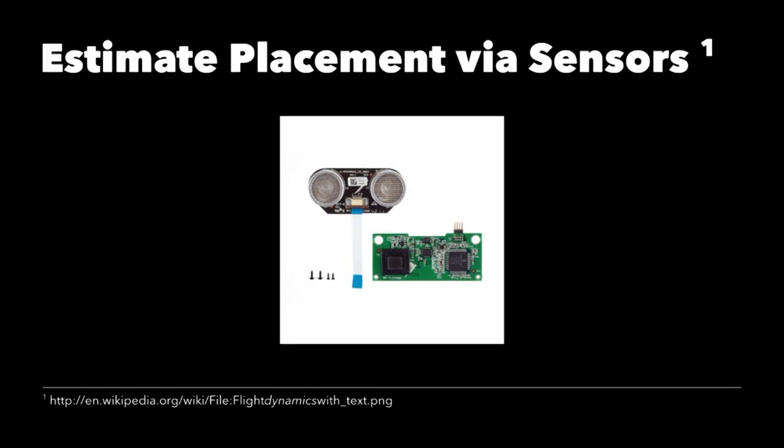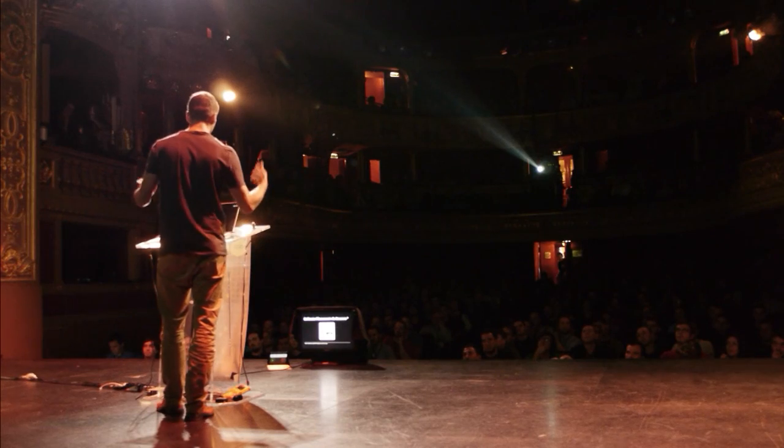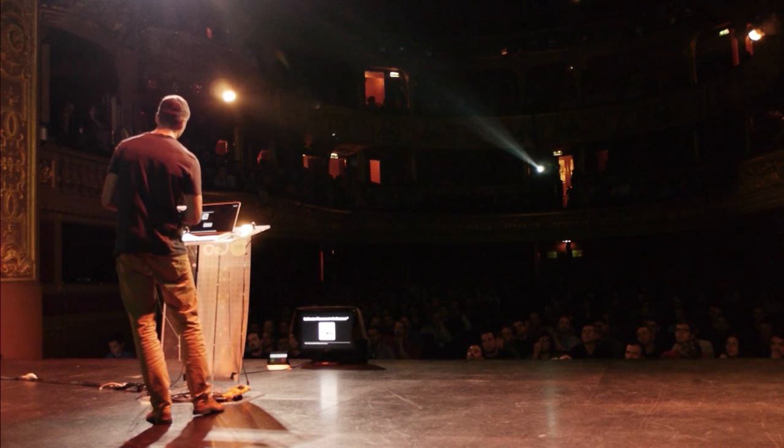Not so straightforward is estimating the placement of the drone via sensors — meaning the orientation in space and the altitude. What you're given by the hardware are low-level sensors: a sonar for altitude, a barometer also for altitude, a gyroscope for rotational velocity, an accelerometer for accelerations, and a magnetometer for compass functionality. But all of these sensors have various issues: gyroscopes drift all the time, and accelerometers don't like fast movements. So you have to apply mathematics and fuse this data together to get an estimate of where you believe the drone to be in space at any given point in time.